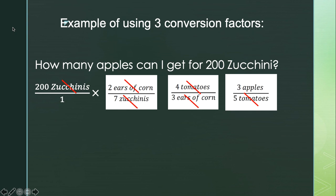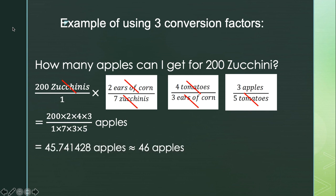Now it's time to do the arithmetic. On top I have 200 times 2 times 4 times 3 apples, and on the bottom I have 1 times 7 times 3 times 5. In the calculator, put 200 times 2 times 4 times 3 divided by 1 times 7 times 3 times 5. Be sure to put parentheses around the numerator and denominator so the calculator handles the order of operations correctly. You get 45.714 apples. Since you can't trade a portion of an apple, you round to the nearest apple, which gives 46 apples.